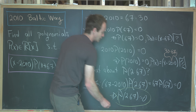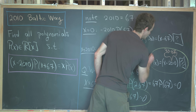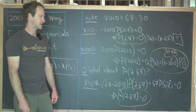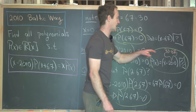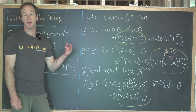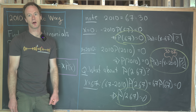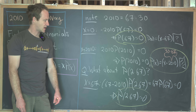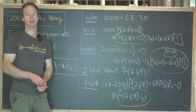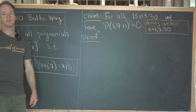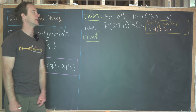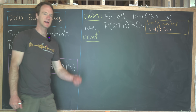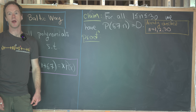So far we've got three roots of our polynomial, all multiples of 67: 1×67, 2×67, and 30×67. Maybe all multiples of 67 between 1 and 30 are roots — that's a good guess based on this data. We'll prove exactly that using induction. The claim is: for all n between 1 and 30, p(67n) equals zero. The base cases n=1, 2, and 30 were just checked.